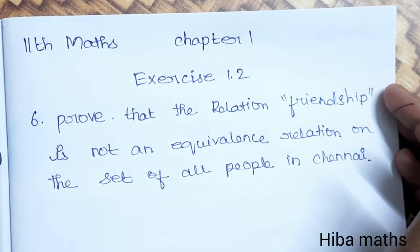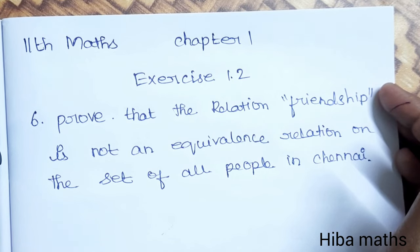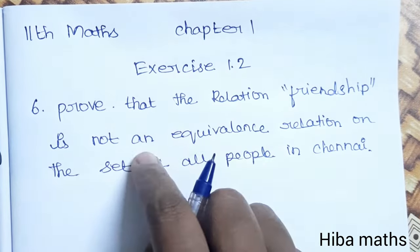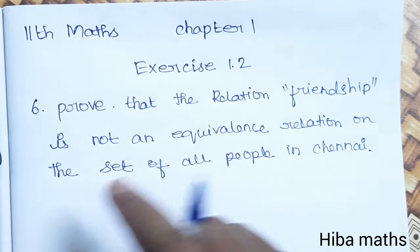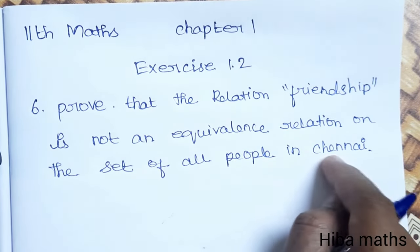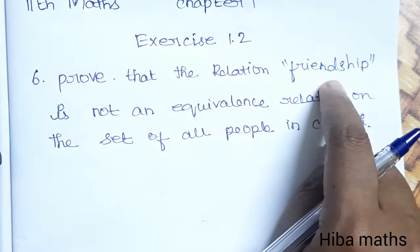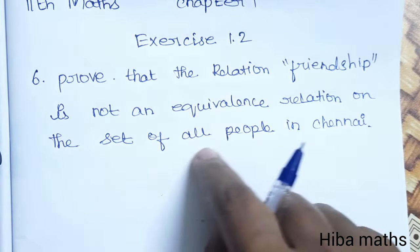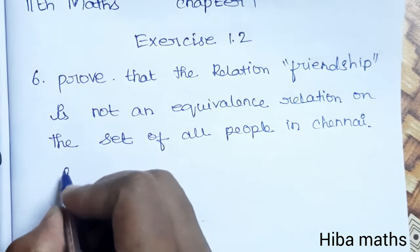Hello students, welcome to Hiba Maths, 11th standard Maths Chapter 1, Exercise 1.2. Let's solve the question. Prove that the relation friendship is not an equivalence relation on the set of all people in Chennai. So we need to prove that friendship is not an equivalence relation on the set of all people in Chennai.